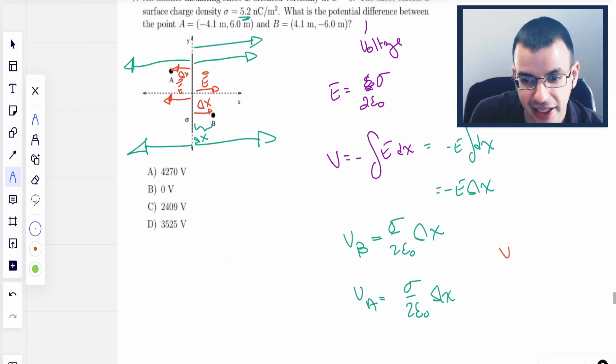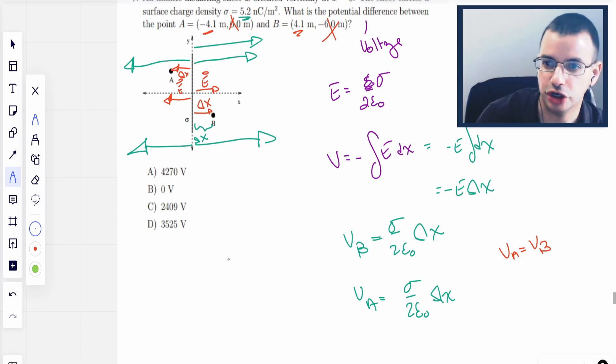And so VA is going to equal VB in this case because they are both at a distance of 4.1 meters in the x direction. The y, irrelevant. No one cares. Because it's an infinite plane, all the electric fields are straight perpendicular to the plane. So VA equals VB.